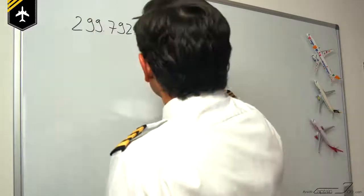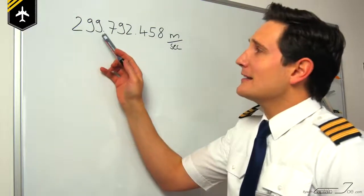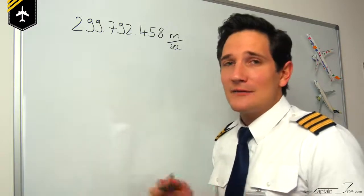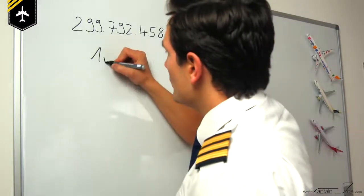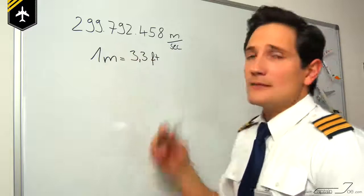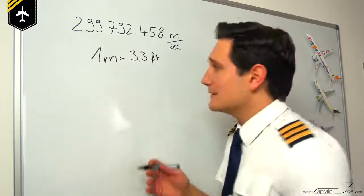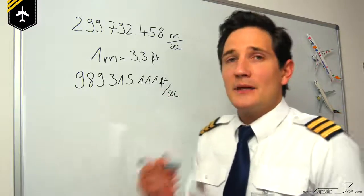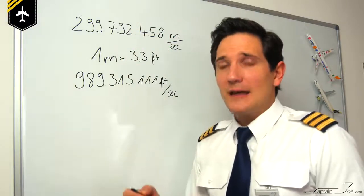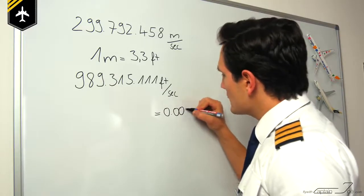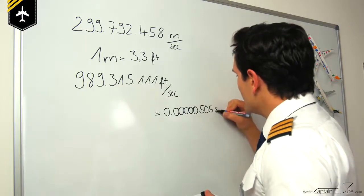Now let's look at the speed of light, which is normally given in meters per second: 299,792,455 meters per second. In aviation, most of it is given in feet, but that is a fairly simple calculation — one meter equals 3.3 feet — meaning you just have to multiply by 3.3 to get the speed of light in feet per second. Now let's say the radio altimeter has measured a time of 0.000000505 seconds for one radio wave transmitting downwards, getting reflected, and being picked up again by the receiving antenna.